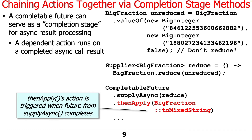We then chain a dependent action — the bigFractionToMixedString method reference — and tell it to run. We're essentially saying to the CompletableFutures framework: please run this dependent action when the CompletableFuture returned from supplyAsync finishes, so that this computation can be performed. One of the cool things about this approach is that it looks visually like synchronous programming: this thing happens, then this thing happens, but in fact it's running asynchronously in the background.